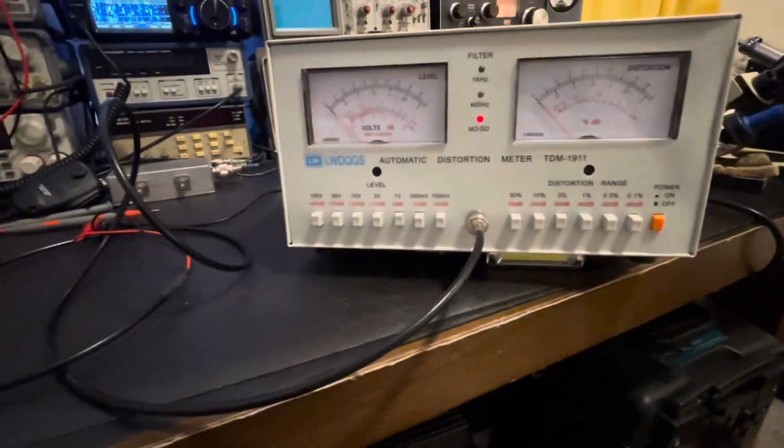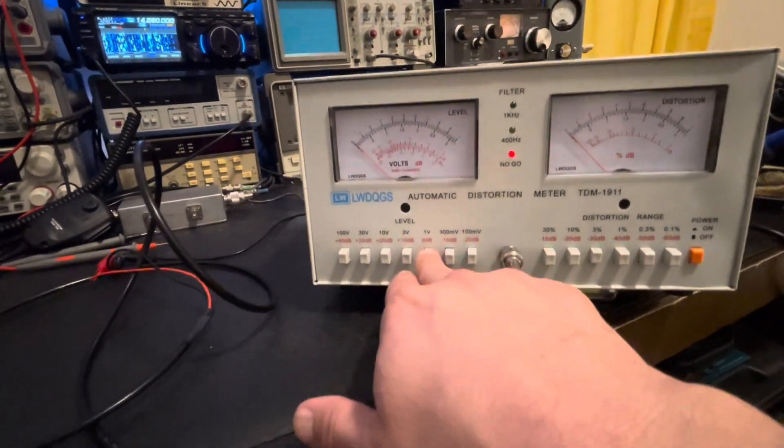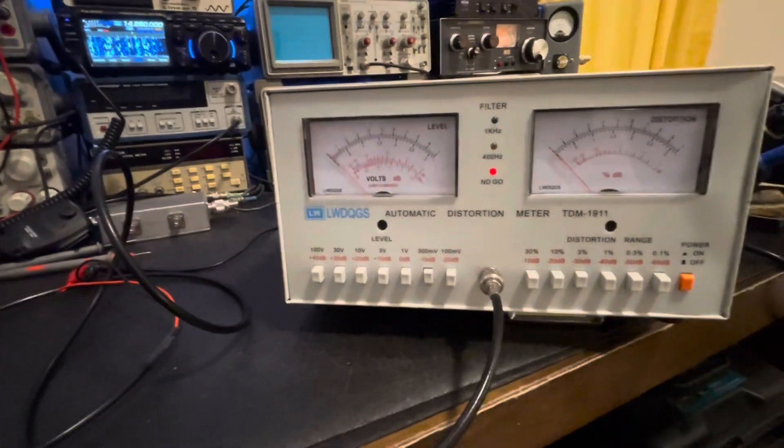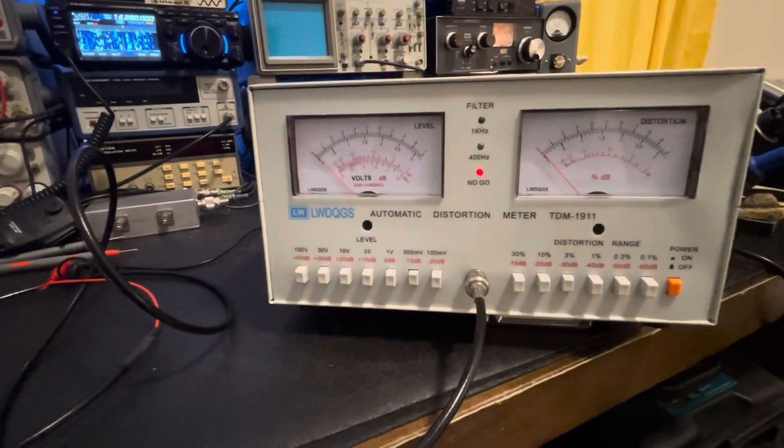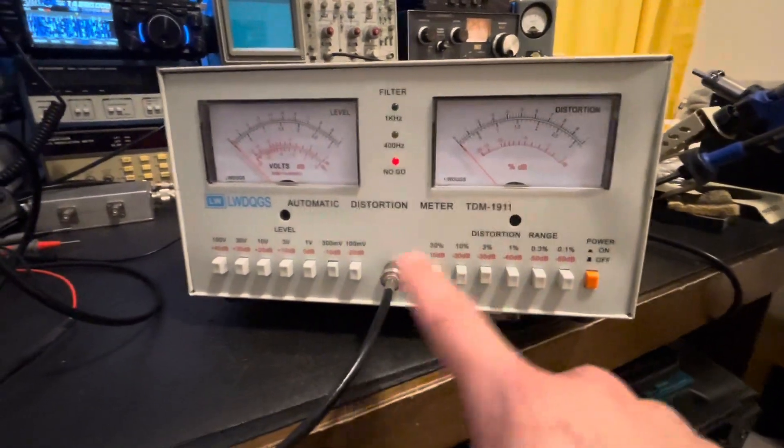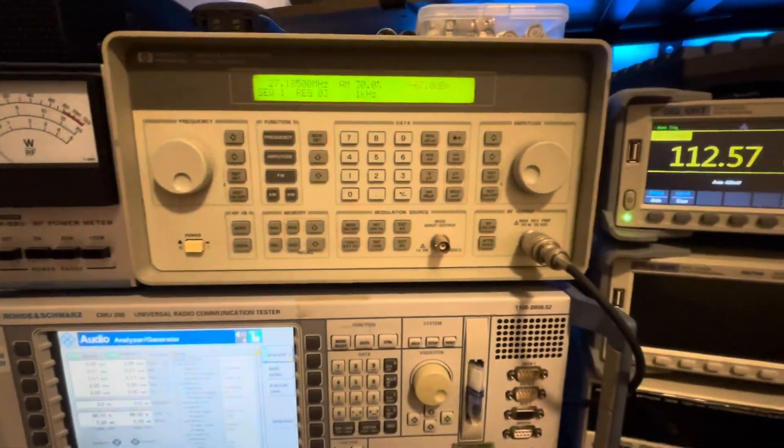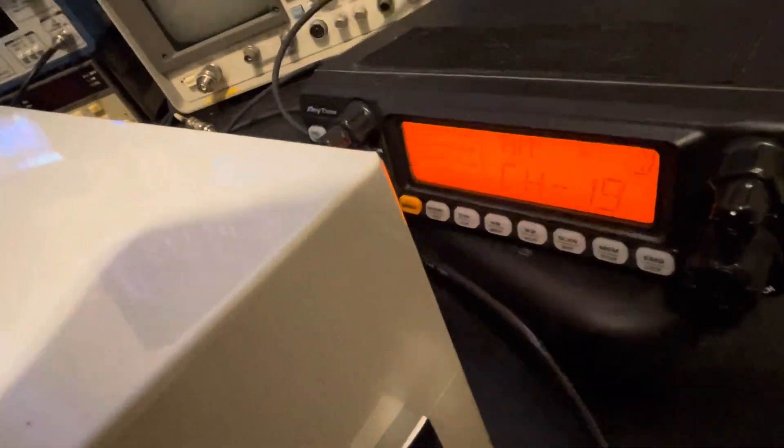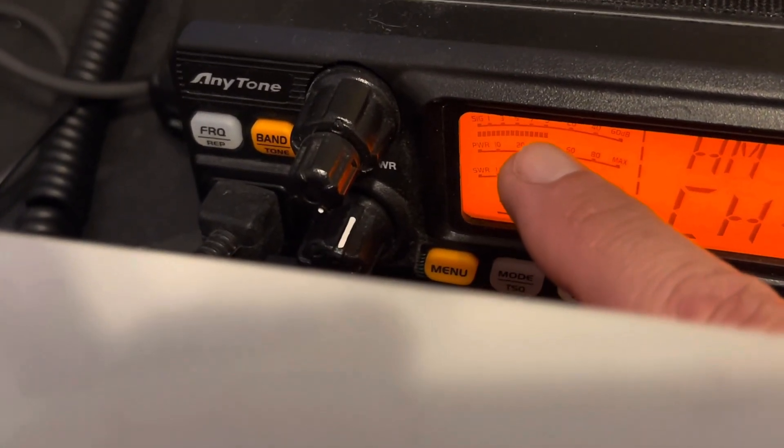We're going to be looking at the one kilohertz tone here. This side over here is our level input. I'm going to set it at 300 because I already know that our signal input from our speaker output of the radio is less than 300 millivolts. Over here right now I've got this set at three percent. Let's go ahead and put our output signal from the generator on now. You can see our signal level of nine here on the radio.